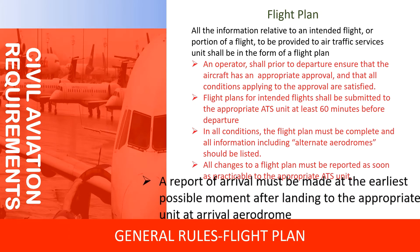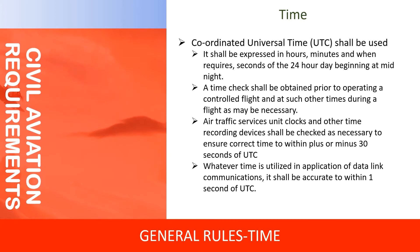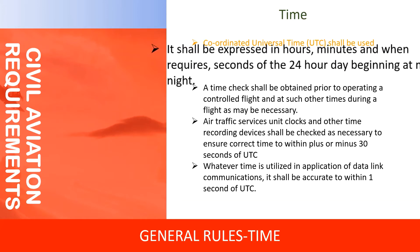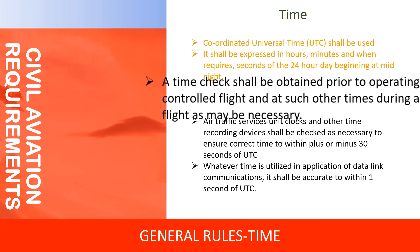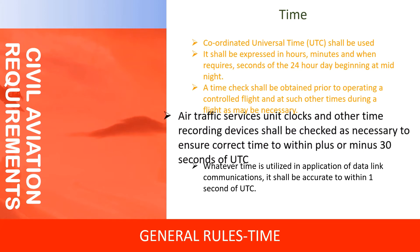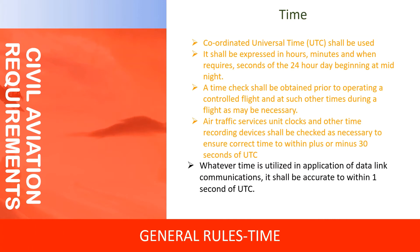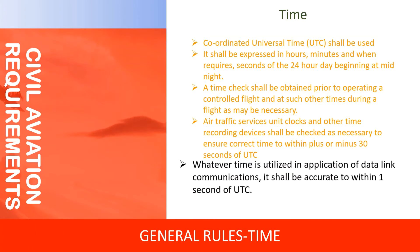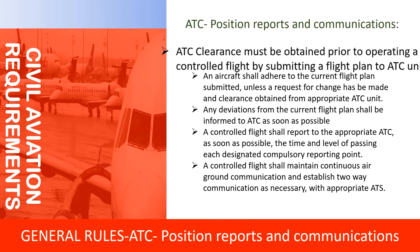A report of arrival must be made at the earliest possible moment after landing to the appropriate ATS unit at the arrival aerodrome. Time plays an important role in aviation: Coordinated Universal Time (UTC) shall be used, expressed in hours, minutes and, when required, seconds of the 24-hour day beginning at midnight. A time check shall be obtained prior to operating a controlled flight. ATS unit clocks shall be checked to ensure correct time to within plus or minus 30 seconds of UTC. For data link communications, time shall be accurate to within one second of UTC.